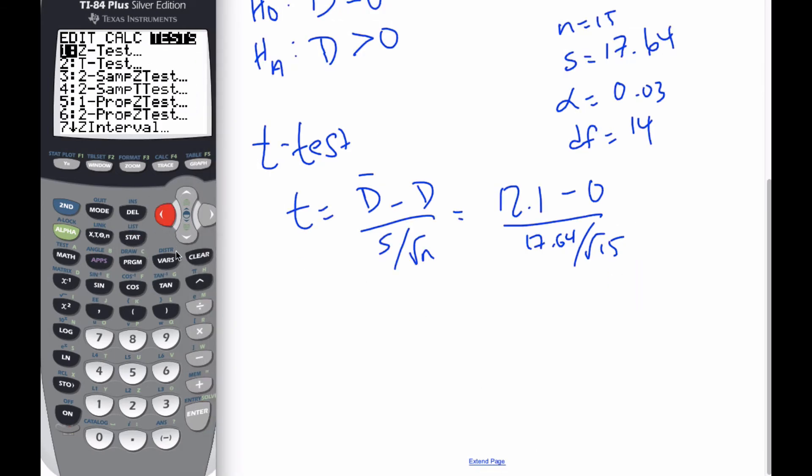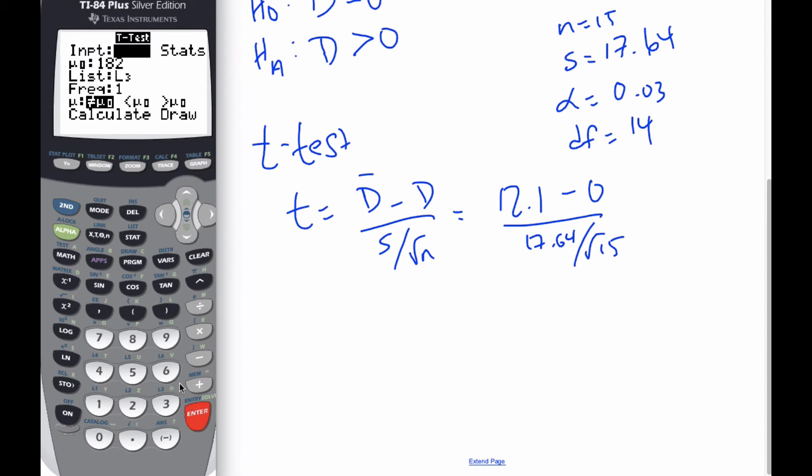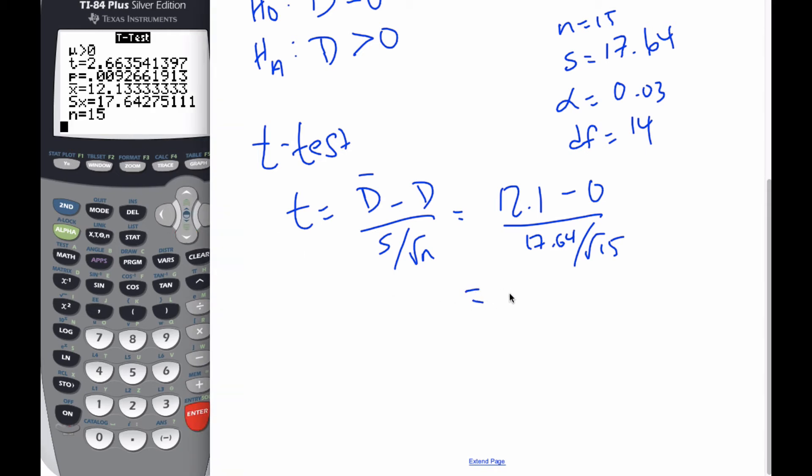But I can do this faster. I'm going to go statistics. I'm going to do a T-test on my data, which I know mu is going to be 0. So, L3 is where my data is. And I want it to be positive. And then I calculate this value. And I know this computation ends up being 2.66. My P-value is equal to 0.009266.